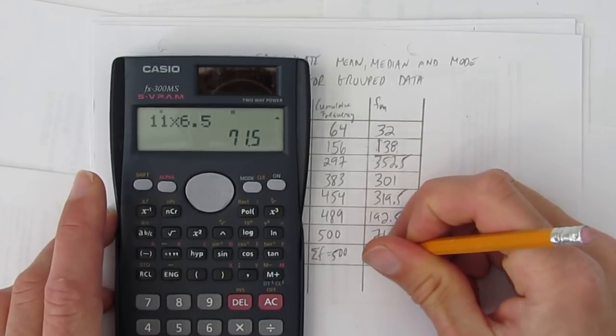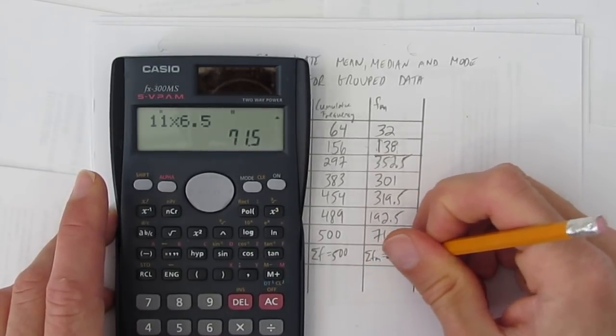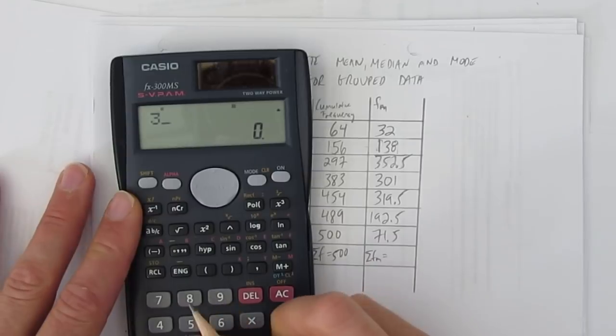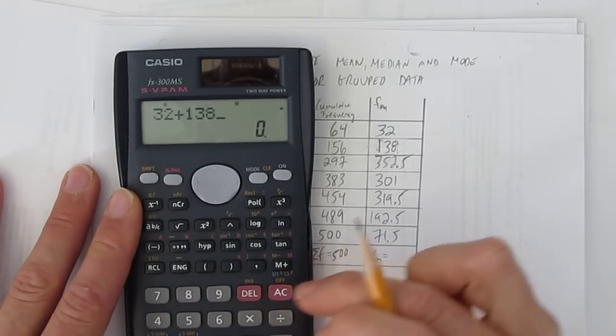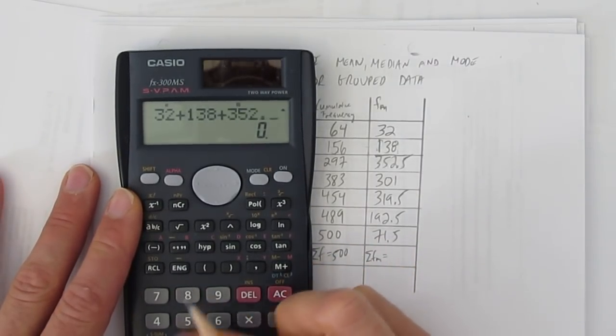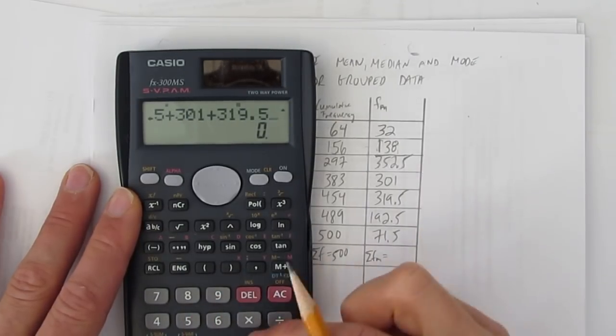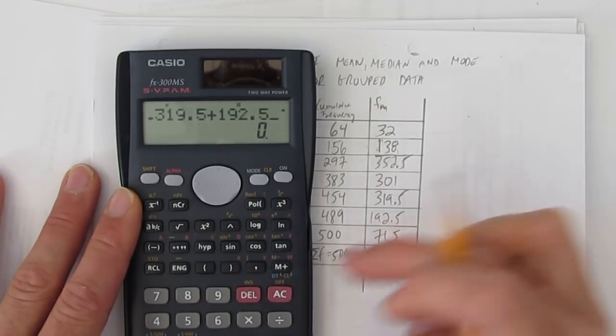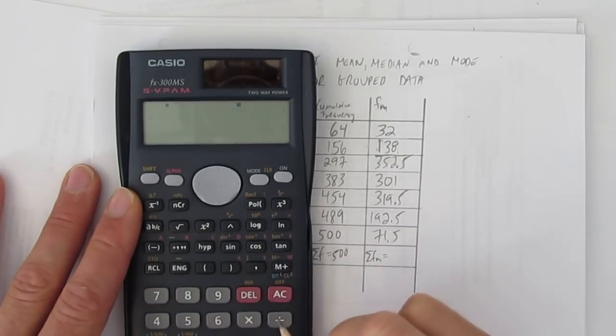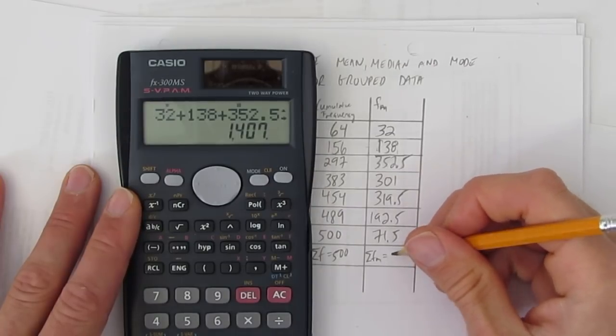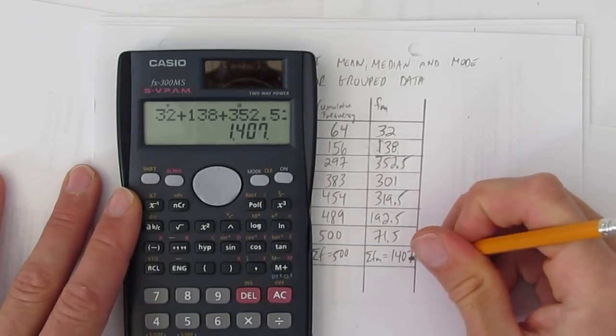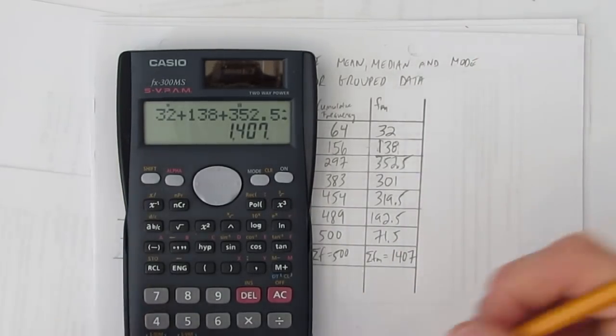So, my total frequency times midpoints. I've got to add all those up. What's 32? Plus 138. Plus 352.5. Plus 301. Plus 319.5. Plus 192.5. Plus 71.5. Is 1,407. Yay!